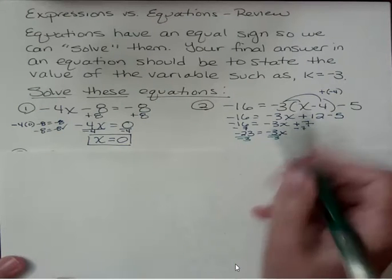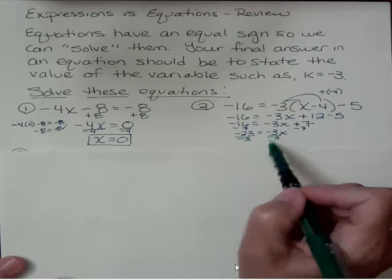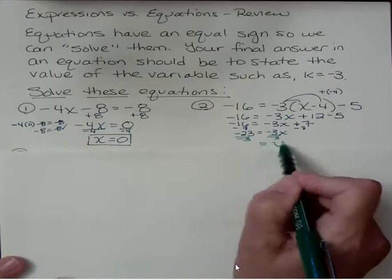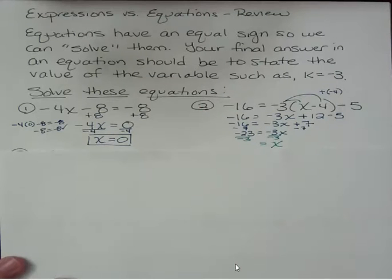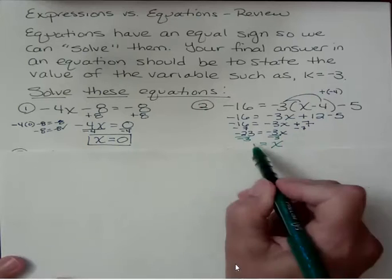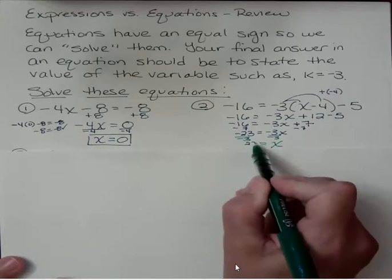And that gives me x over here because negative 3s cancel each other exactly. And you get x. You get 1x. Don't need to write the 1. Over here a negative and a negative cancel each other. But then I'm left with the 23 thirds.